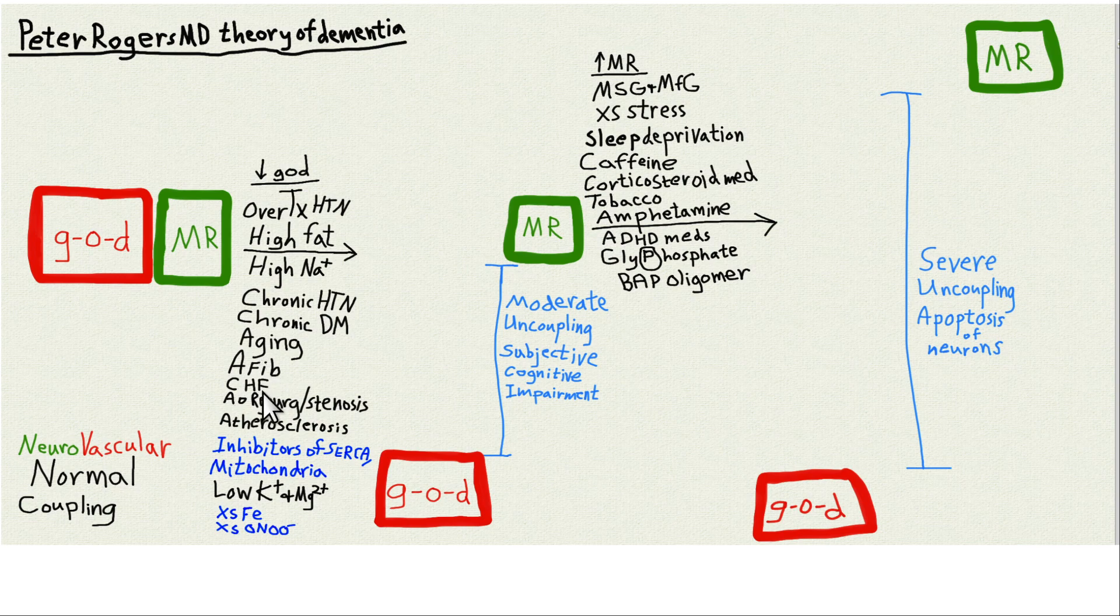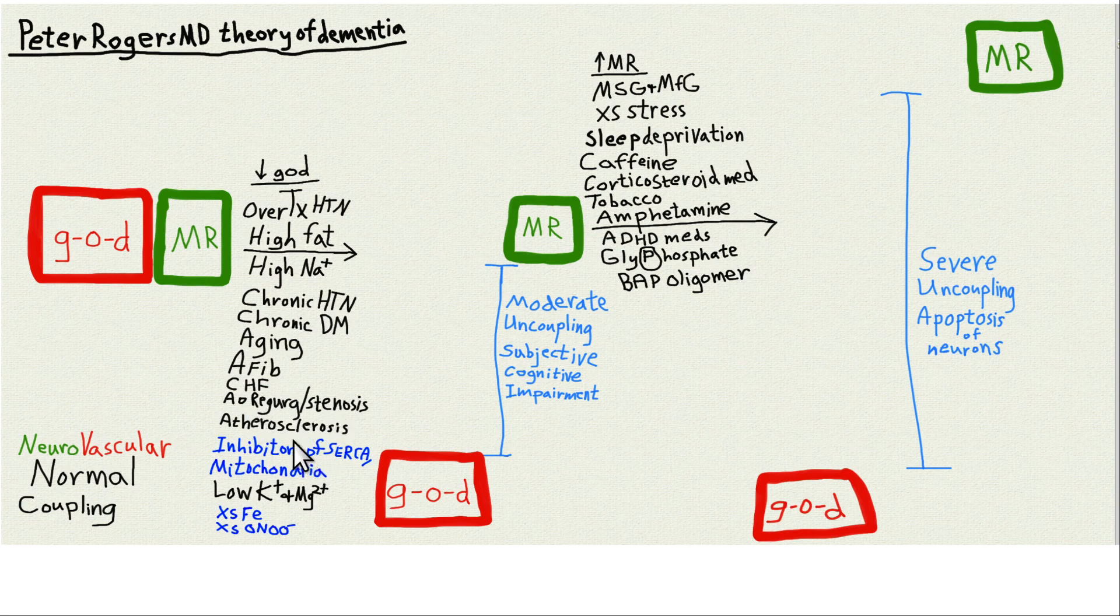So all of these things decrease the ability to deliver glucose and oxygen to the neurons. If you've got cardiac problems, that'll contribute as well to making things worse for glucose and oxygen delivery. Atrial fibrillation, congestive heart failure, aortic regurgitation, aortic stenosis, atherosclerosis. Inhibitors of sarcoplasmic endoplasmic reticulum calcium ATPase.